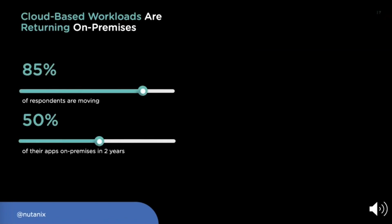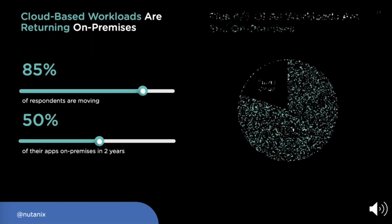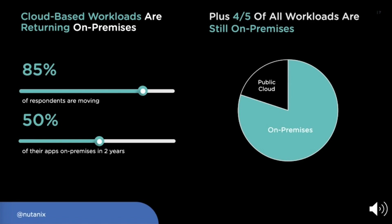Public cloud also has limitless resources, making it very easy to undergo cost overruns. It's no wonder that cloud-based workloads are returning on-premises. An IDC survey found that 85% of respondents intend to move over 50% of their cloud-based applications back on-premises over two years. And let's not forget: four out of five workloads are still on-premises and we need a solution for those on-premises workloads as well.